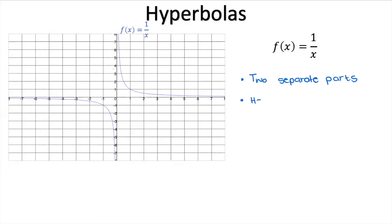There is no x-intercept, nor is there a y-intercept. At no point does this graph cut the x or the y-axis. In fact, if we carried these axes to infinity, they would never cross the x or the y-axis.